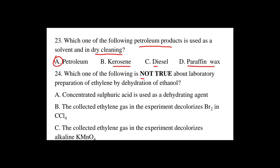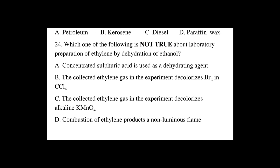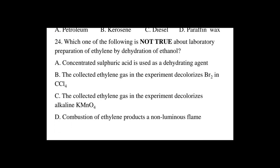Question number 24: Which one of the following is true about the laboratory preparation of ethylene by dehydration of ethanol? A. Concentrated sulfuric acid is used as the dehydrating agent. B. The collected ethylene gas in the experiment decolorizes bromine in carbon tetrachloride.